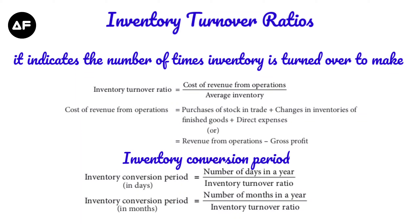Cost of revenue from operations can be calculated using two different formulas: purchases plus change in inventories of finished goods plus direct expenses, or when revenue from operations is given, you can use revenue from operations minus gross profit to get the cost of revenue from operations. This is one of the most important formulas in ratio analysis.